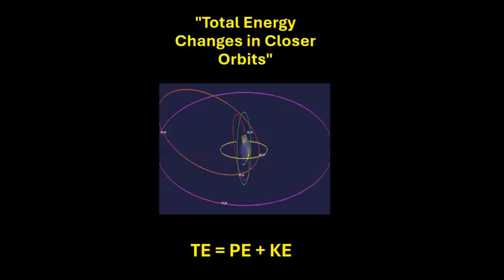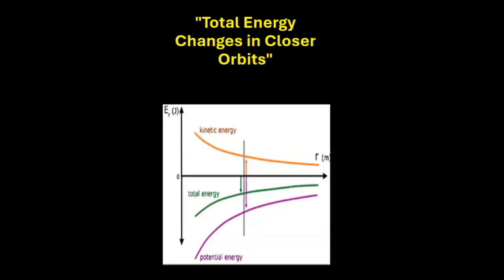The increase in the kinetic energy is less as compared to the decrease in the potential energy. As a result of this, when a satellite moves to an orbit closer to the Earth, the total energy reduces. The satellite loses its energy when it comes to an orbit closer to the Earth.